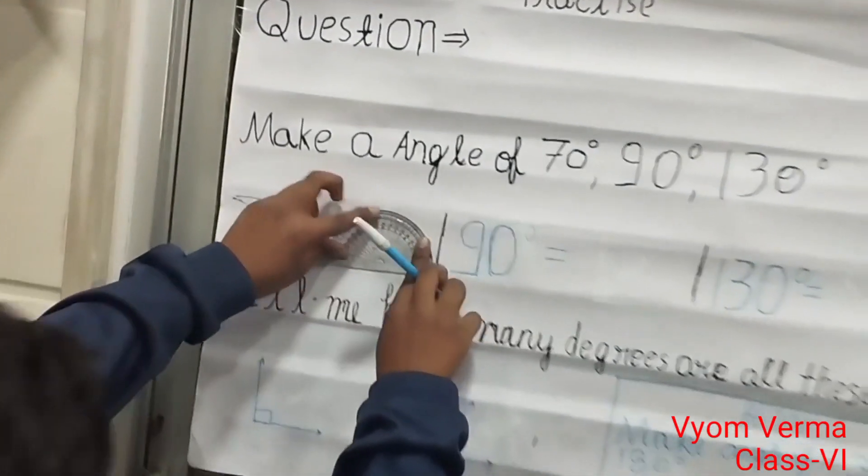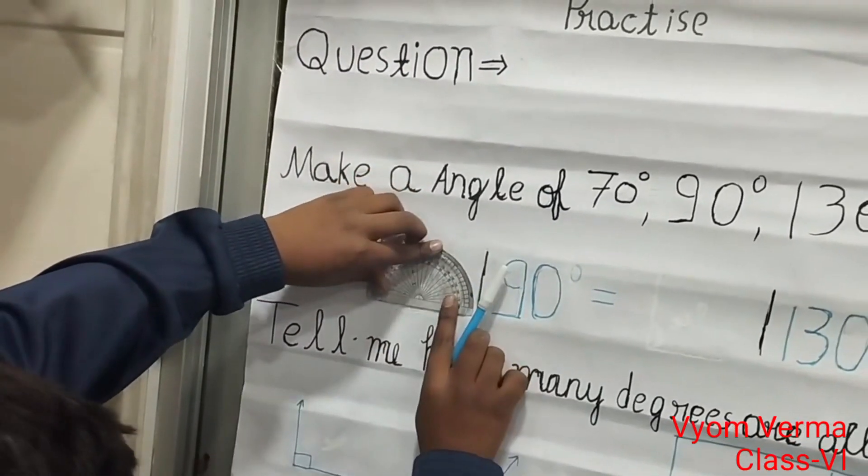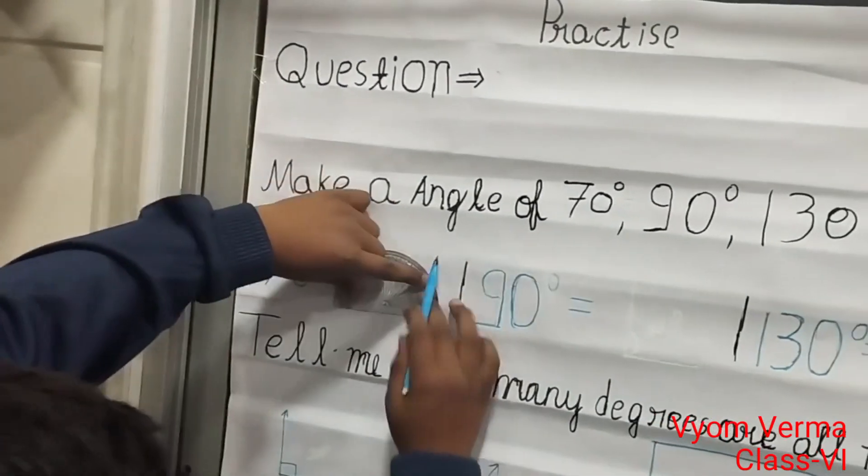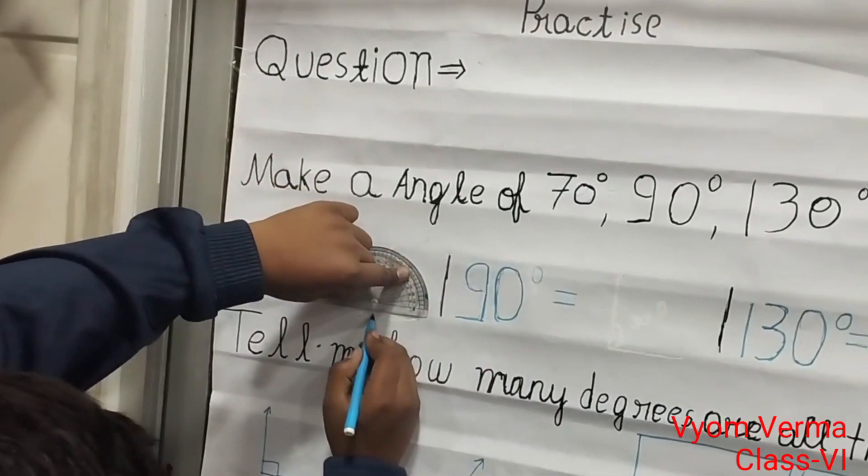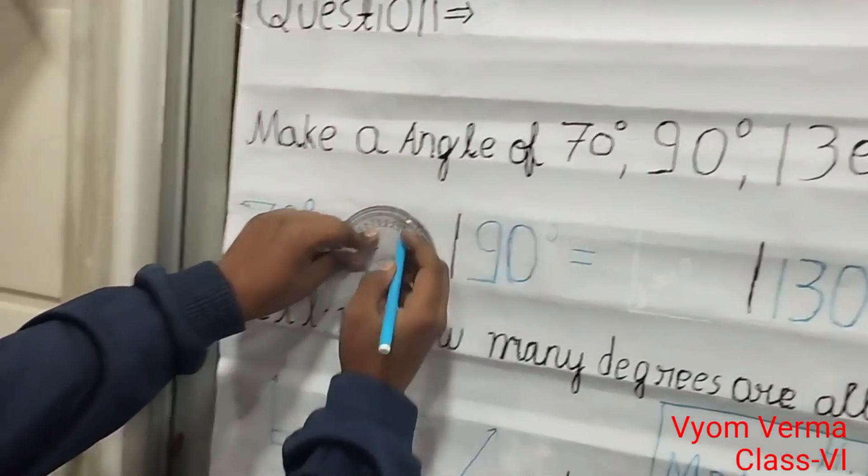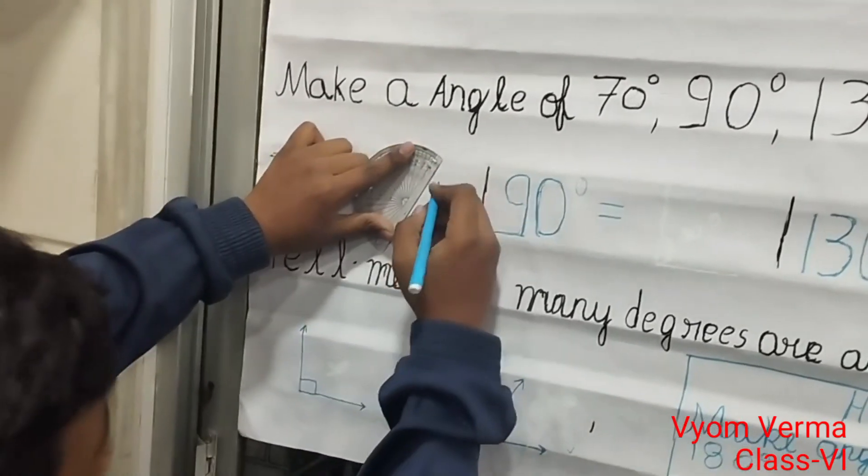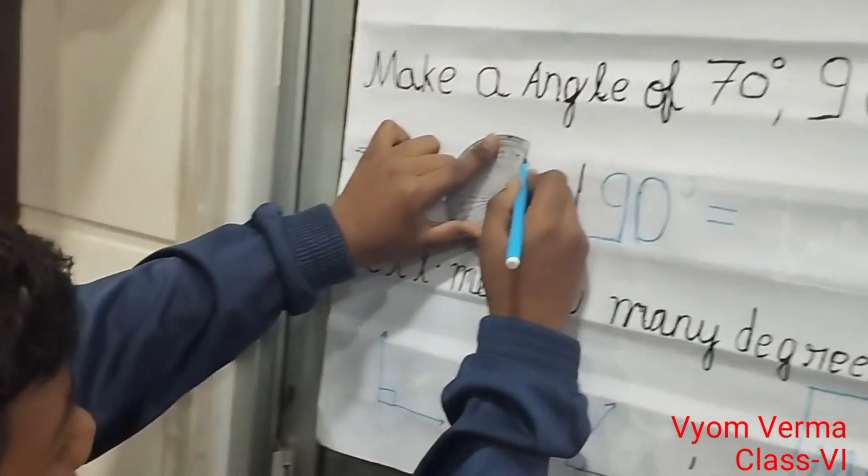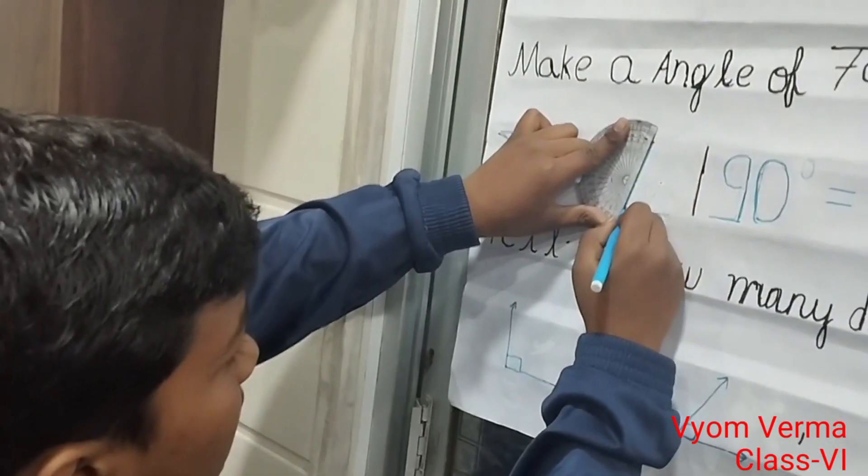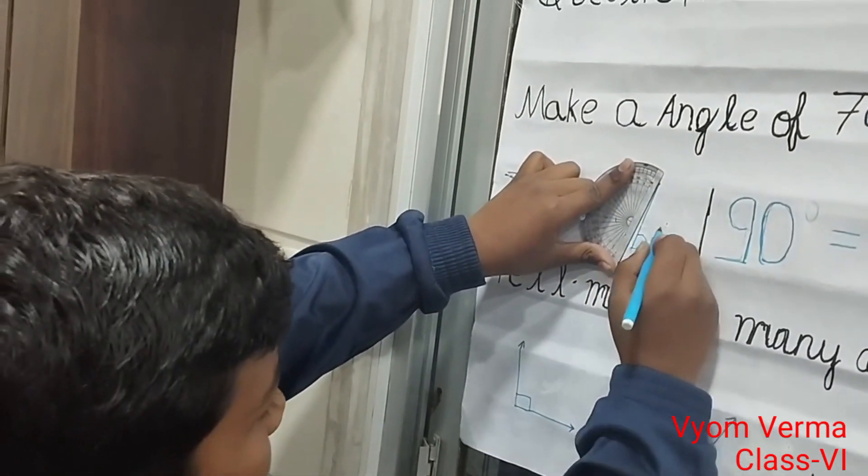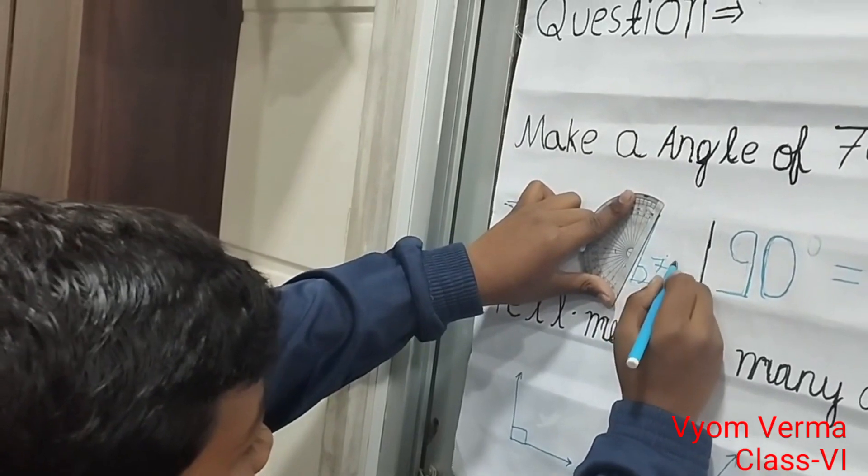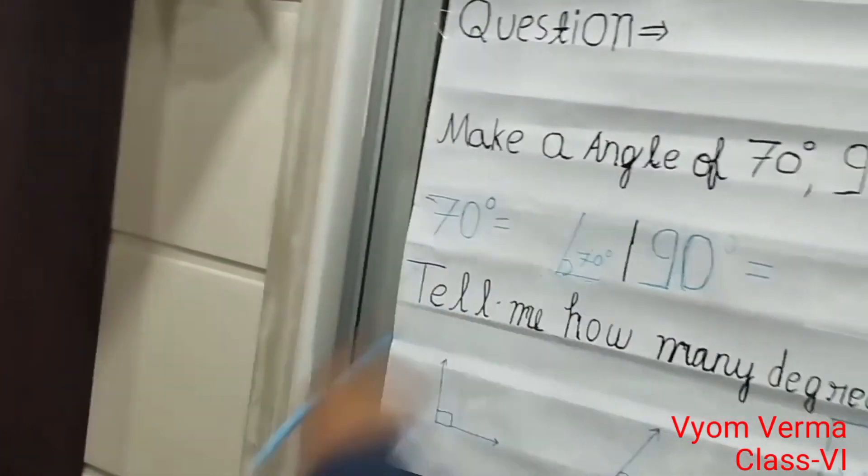First, you have to put the protractor on the line and draw a straight line. Here you can see 70 degrees. Put a dot there and make a line. You can see it is 70 degrees.